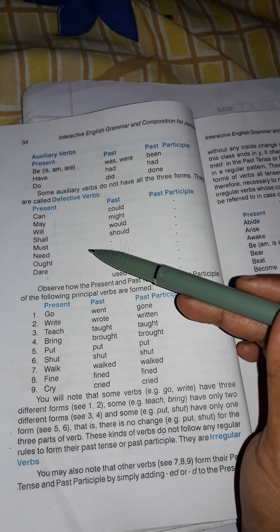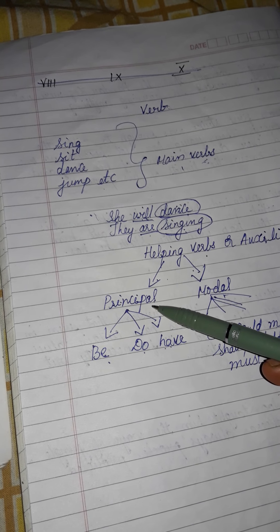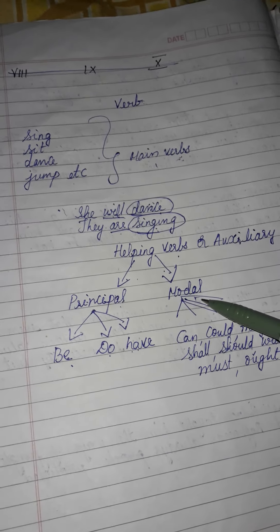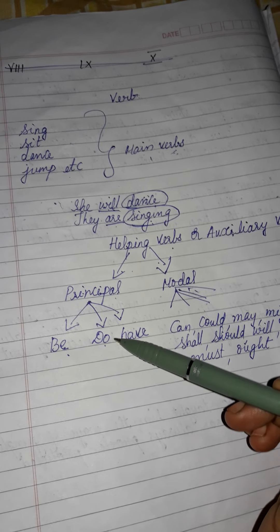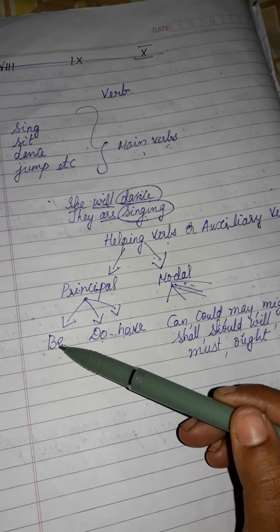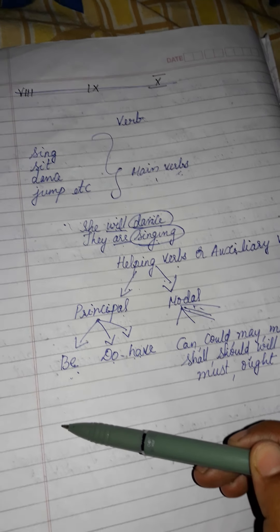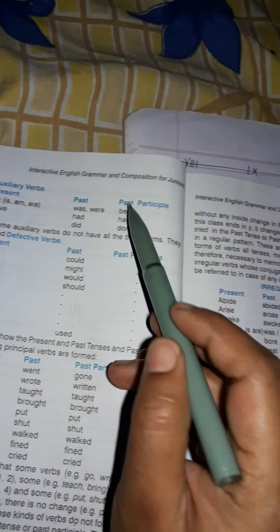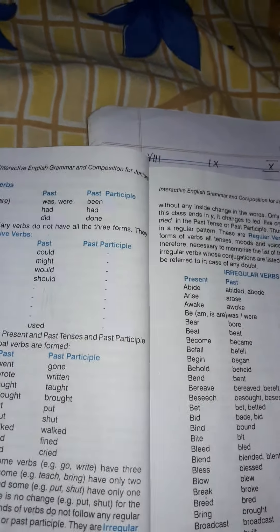So, we have two types of helping verbs: principal auxiliaries (also called principal helping verbs) and modal auxiliaries (also called modal helping verbs). Principal: three types — be, do, have. Modal: so many. Be verb present: is/am/are. Past: was/were. Past participle: been. Do: past did, past participle done. Have: past had, past participle had. These modal auxiliaries are also called defective verbs.